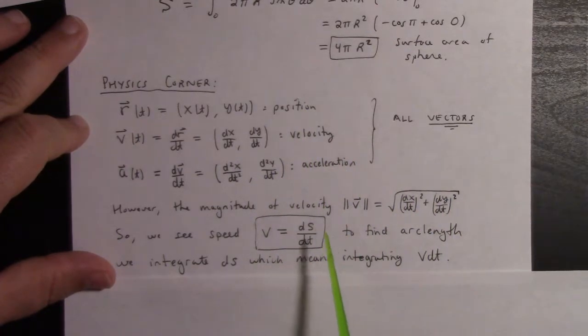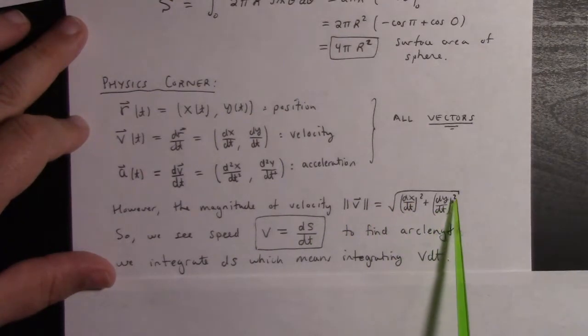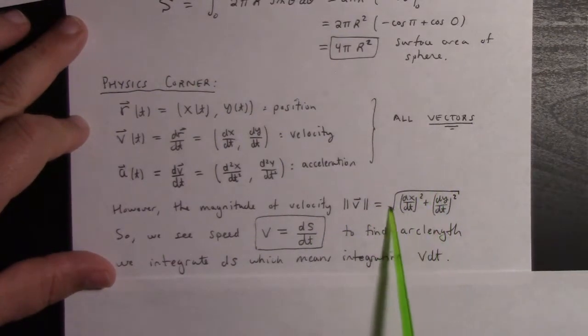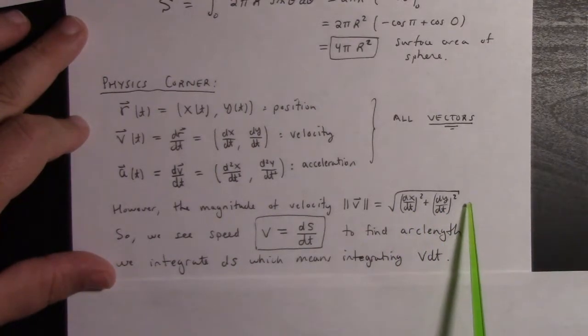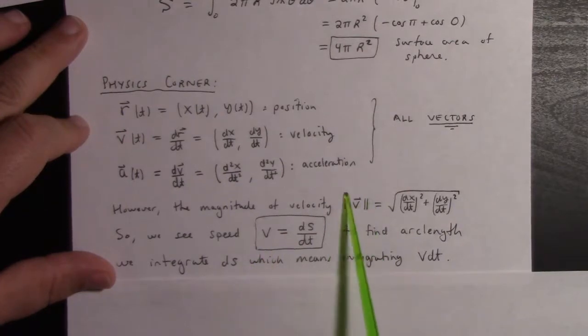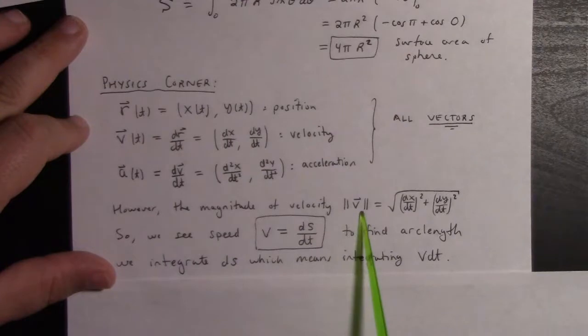The magnitude of the velocity is √((dx/dt)² + (dy/dt)²), which we recognize when we multiply by dt as being ds. So if we divide by dt, we get that the speed, which is the velocity without a vector, the magnitude of the velocity, is given by ds/dt.